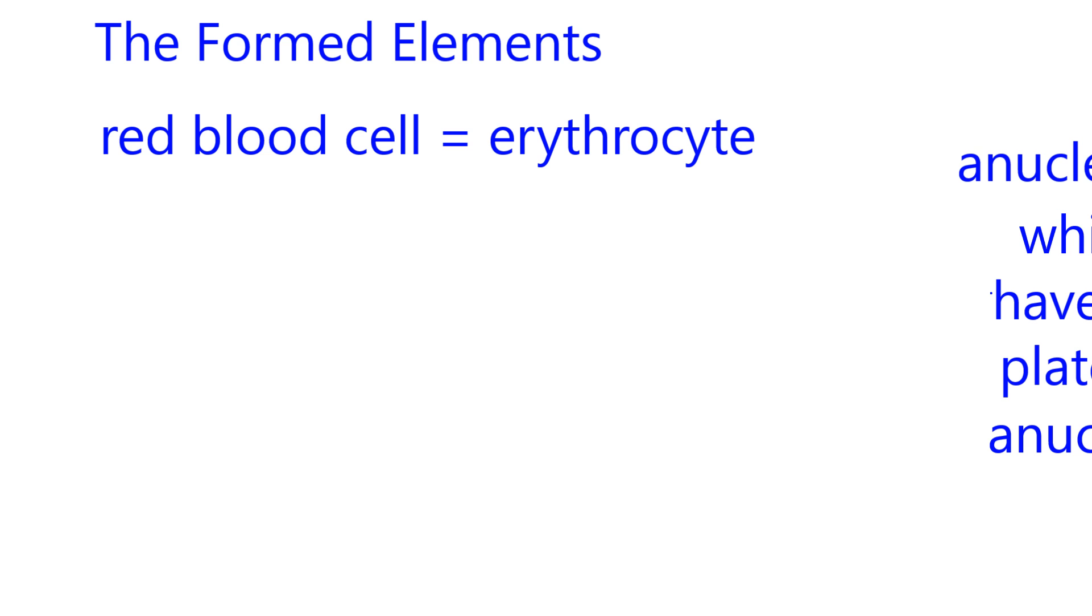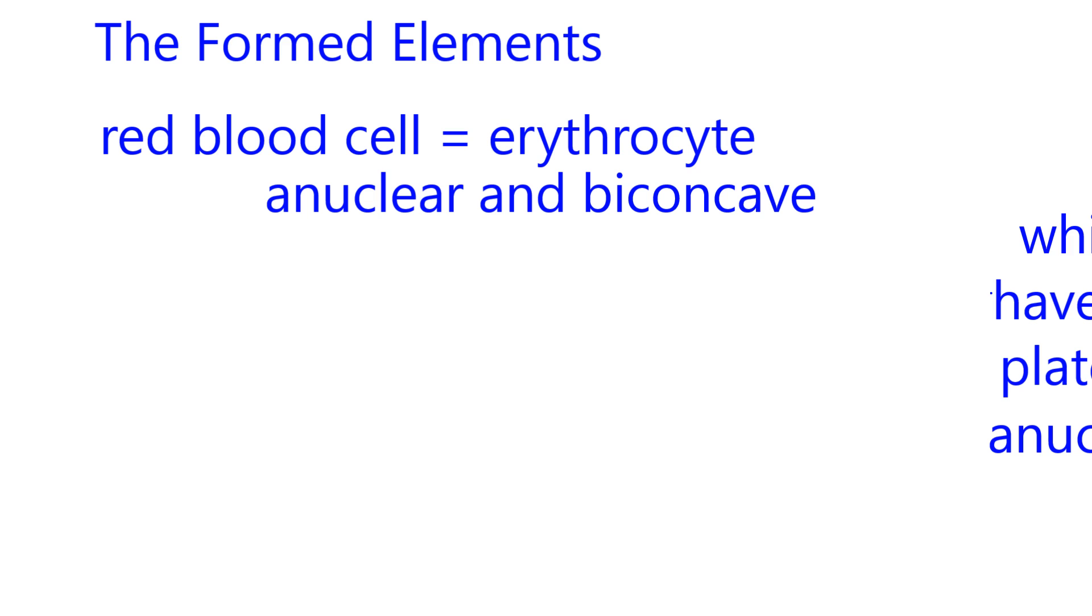A characteristic of red blood cells is they are anuclear. The A here in front of the word nuclear means without, anuclear. And then they are biconcave. So the middle of the red blood cell is thinner than the outer margins and that's why a red blood cell, when viewed by a microscope, looks very much lighter in the middle of the cell.